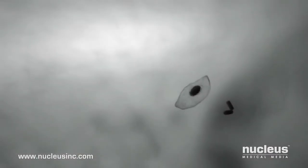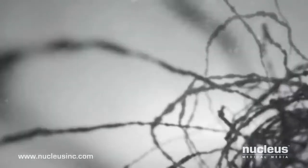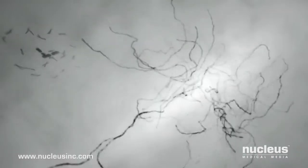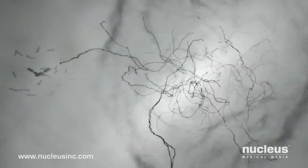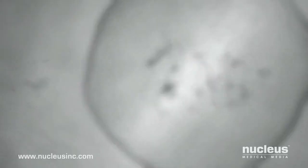Meanwhile, inside the egg, the tightly packed male genetic material spreads out. A new membrane forms around the genetic material, creating the male pronucleus.